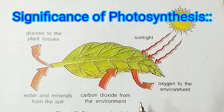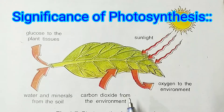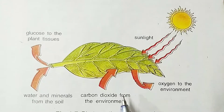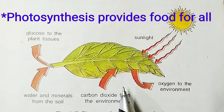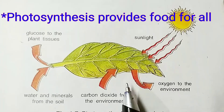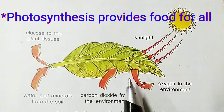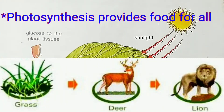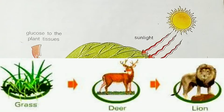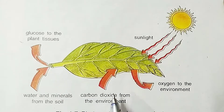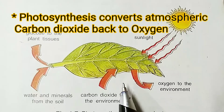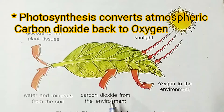Now, what is the significance of photosynthesis — why is it important? Photosynthesis provides food not only for the plants, it provides food for all. Though the process of photosynthesis occurs in green plants, these green plants are the primary producers in a food chain. From the plants, herbivores get their food; from the herbivores, carnivores get their food. So all organisms directly or indirectly depend on this reaction. Another important point is that photosynthesis converts atmospheric carbon dioxide — generally produced by respiration and other activities — back to oxygen, and that's why this reaction is so important for all living organisms.